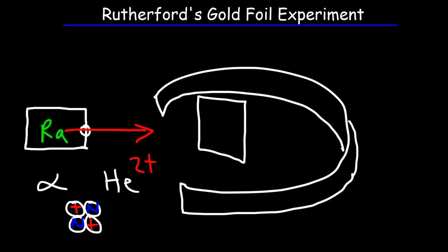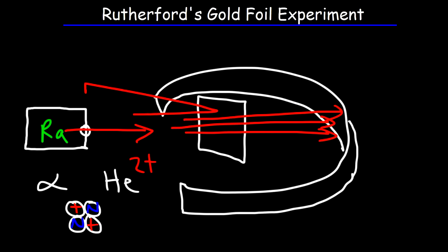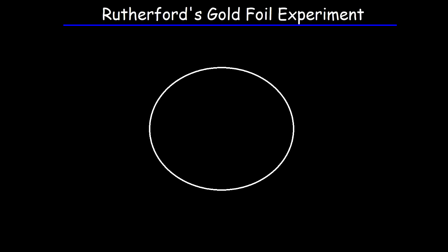What he realized is that many of the alpha particles went straight through the gold foil. However, some of them bounced back, while others were deflected at large angles. He came up with some very important conclusions based on what he saw, and he realized that the Plum-Pudding model couldn't be correct.